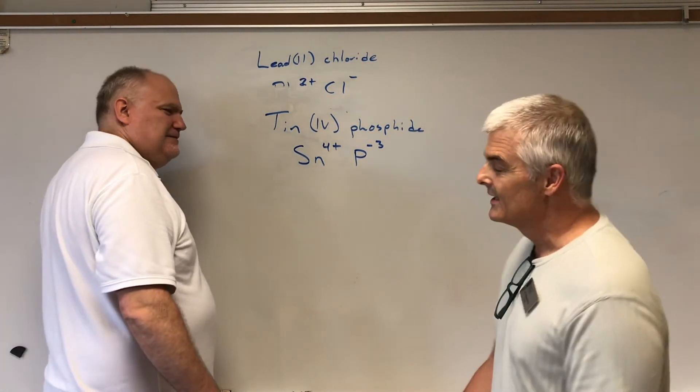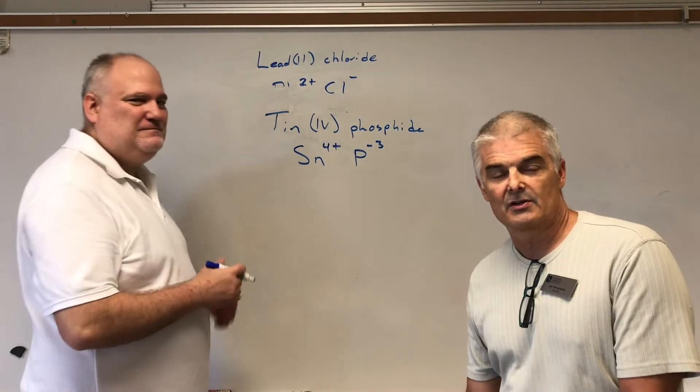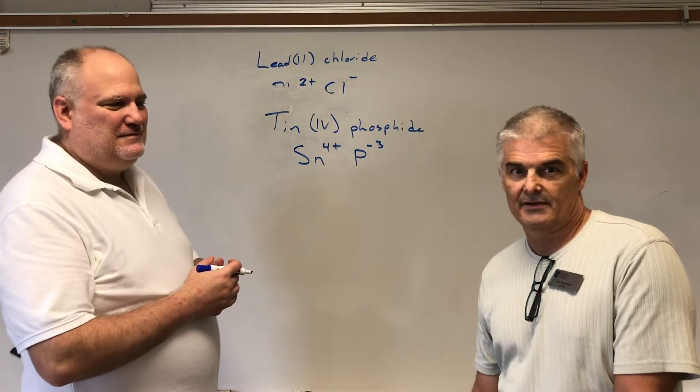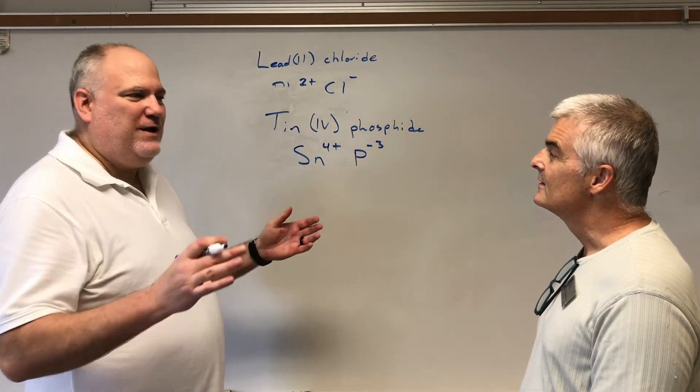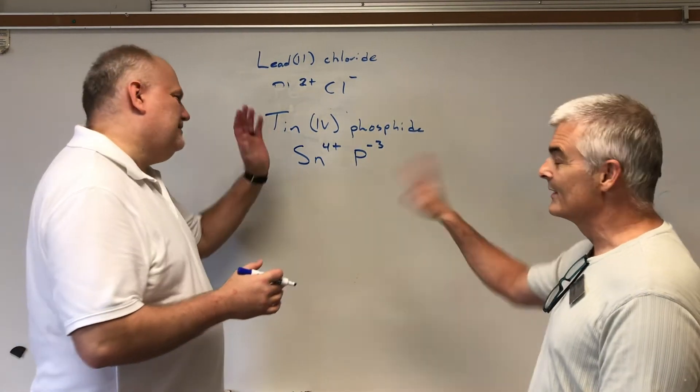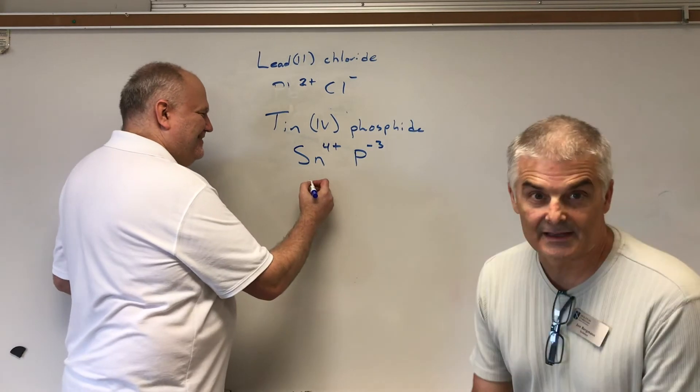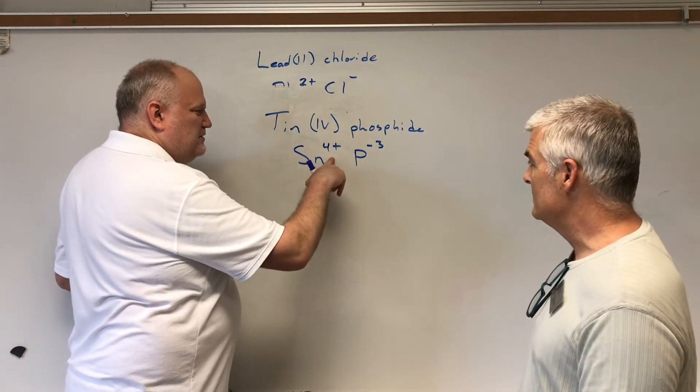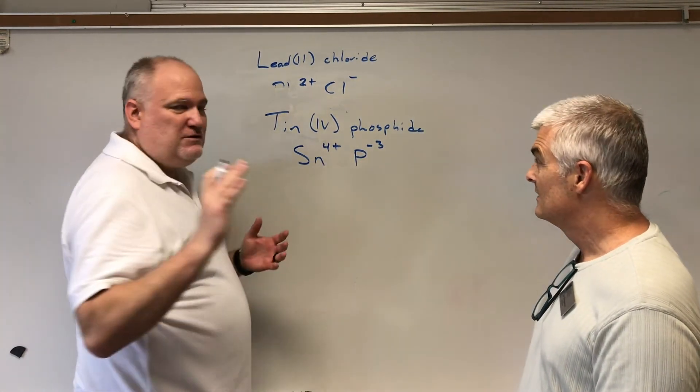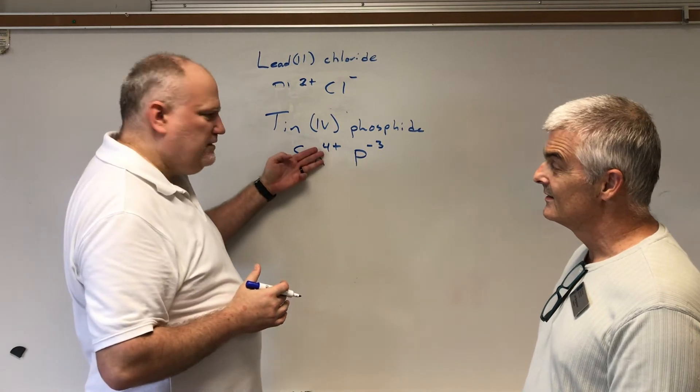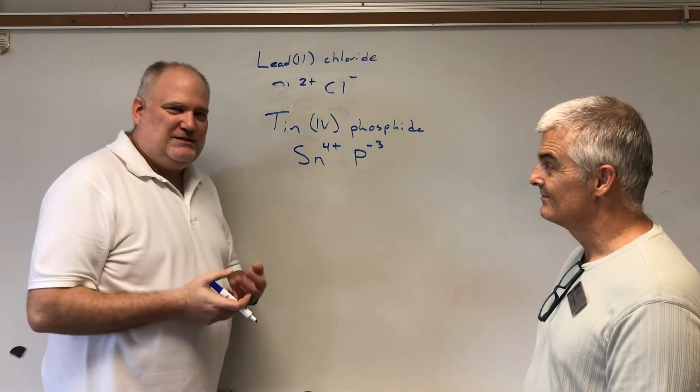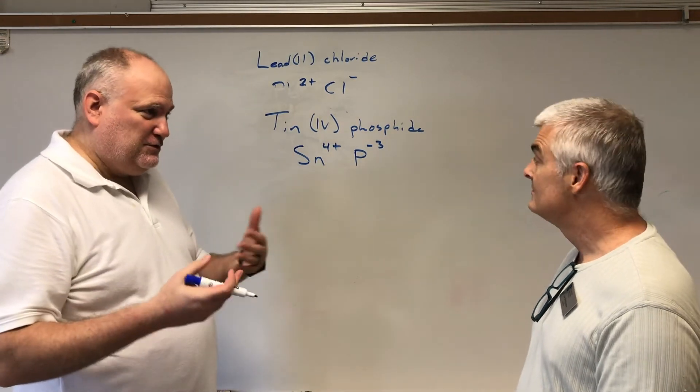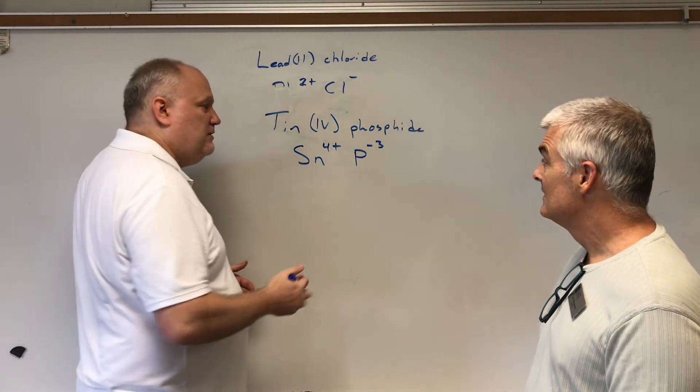Now we need to get them to the same number. This is tricky because you've got to get, honestly, a little math stuff. Do you realize you're trying to find the least common multiple? That's what you're trying to find. I'm Canadian. We call it the least common denominator, but either way it works. It's a multiple, isn't it? Whatever. So we need to get the ratio. So what's the ratio going to be? So we have four here and three. Now, if you're quick with math, you could probably say, well, you need three of these and four of these.